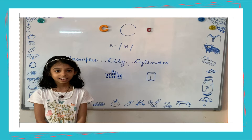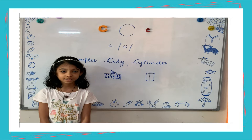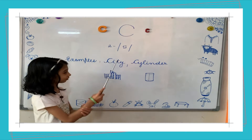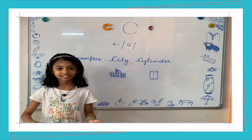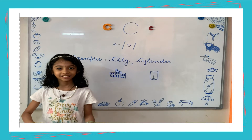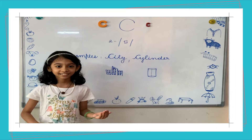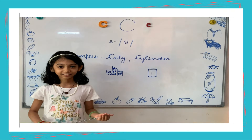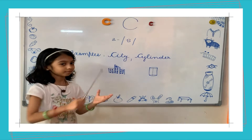Now let's look at the examples. The first one is City: S-I-T-I. I repeat: S-I-T-I. The second example is Cylinder.